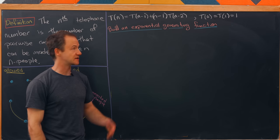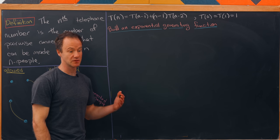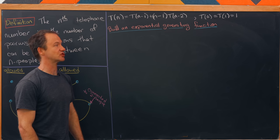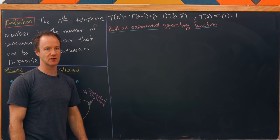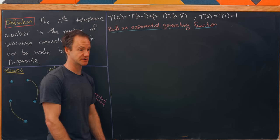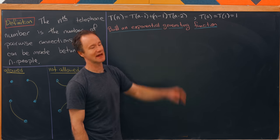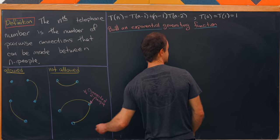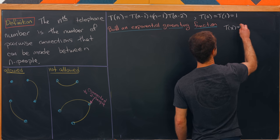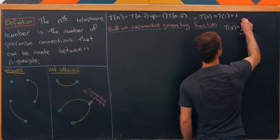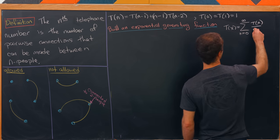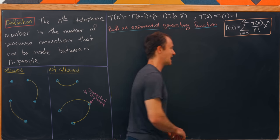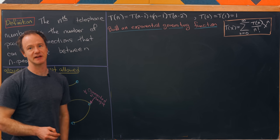We now have the recursion t(n) = t(n−1) + (n−1)·t(n−2), with seeds t(0) = t(1) = 1. We'll build an exponential generating function. There are two main types: ordinary and exponential generating functions. Anytime you have a multiplication by the index, the exponential generating function is often the way to go. We set T(x) equal to the sum from n=0 to infinity of t(n) over n factorial times x to the n.